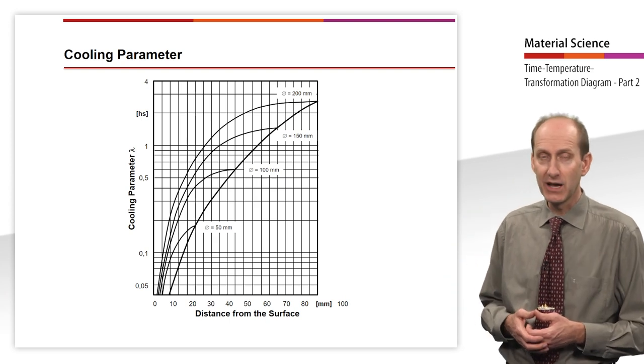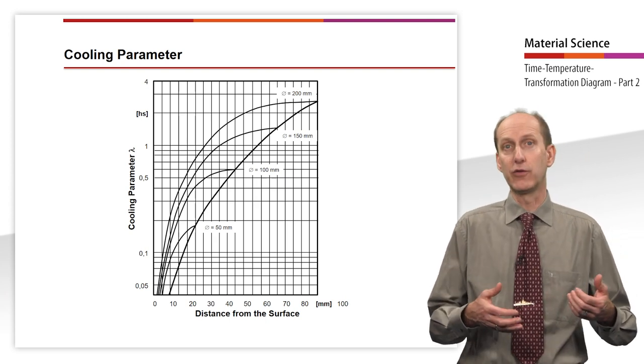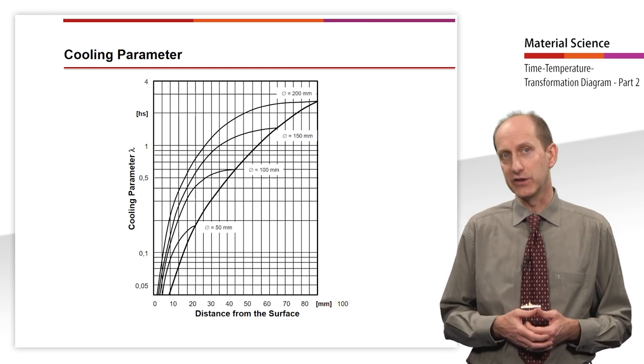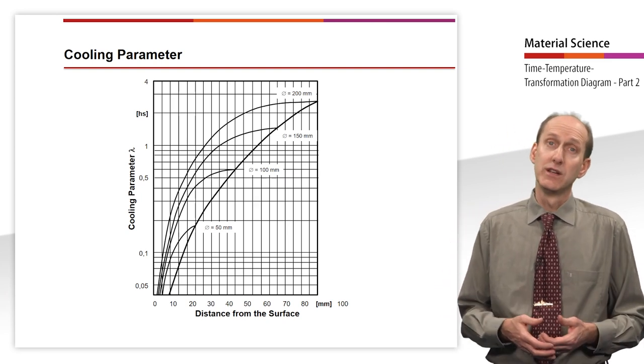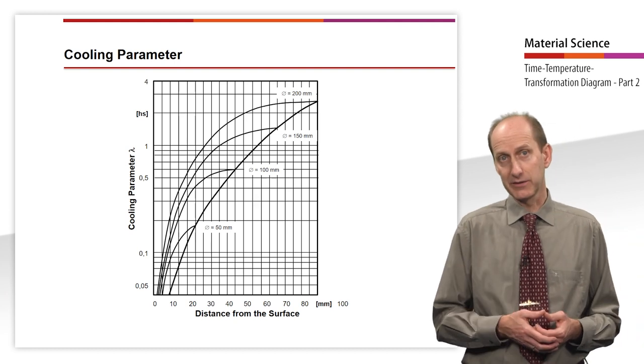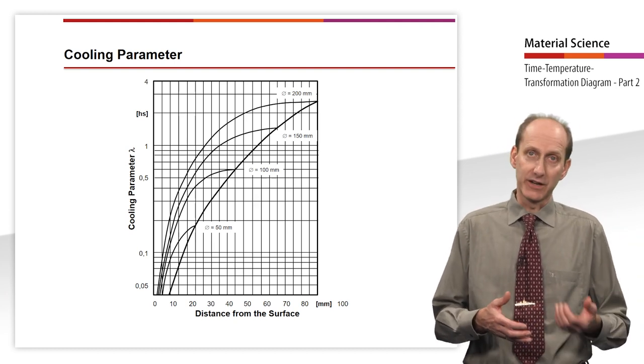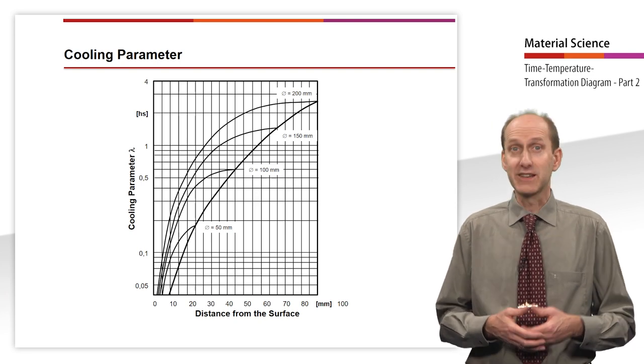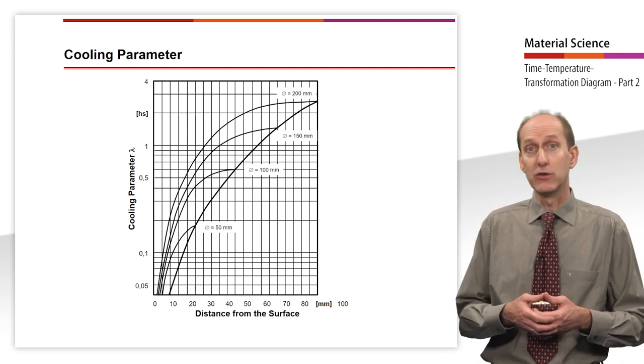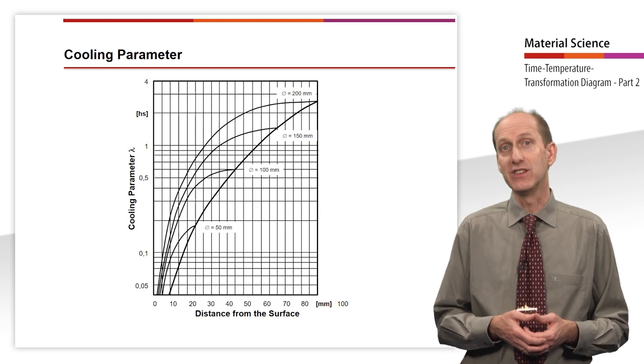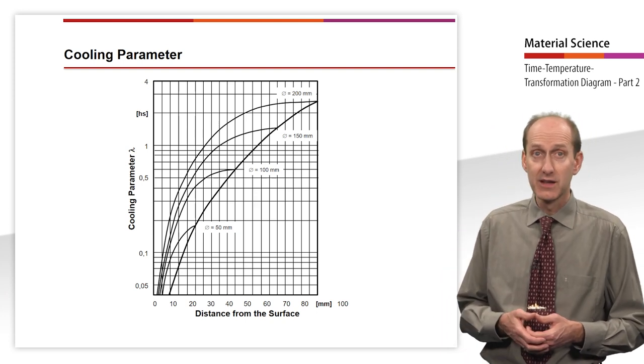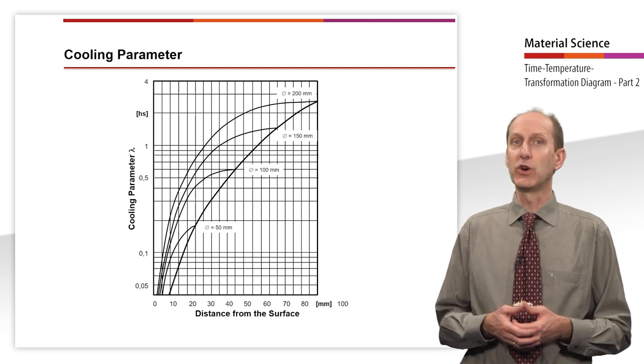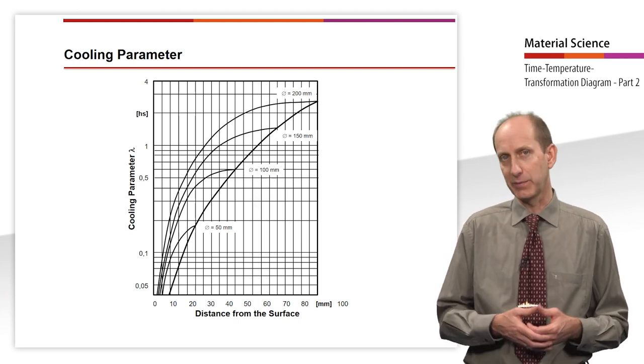The specification lambda equals 3 therefore means that the cooling from 800 to 500 degrees Celsius took about 3 hectoseconds, means 300 seconds, i.e. 5 minutes. It can thus be read which cooling time is needed to achieve martensitic hardening, and whether through hardening is possible, or up to which workpiece depth it can be expected.